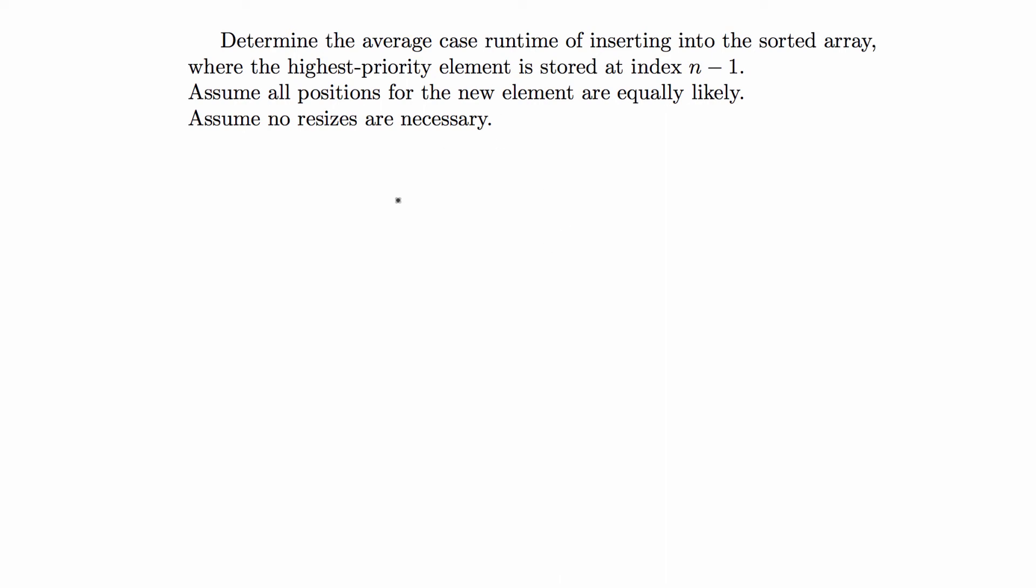Hey guys, in this video I'm going to go over an average case analysis example. This one is for inserting into a sorted array where when you insert to the array, the highest priority element is inserted at the end. We are given that all the positions for the new element are equally likely, so the probability will be the same for any index, and we are assuming that we don't have to worry about resizing.